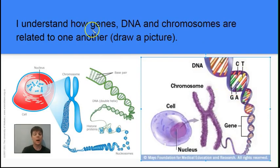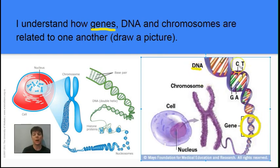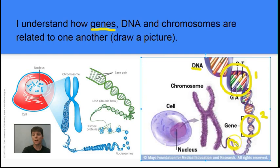Our next learning target is to understand the relationship of genes, DNA, and chromosomes. A gene is just a small region of a DNA molecule, and a gene is going to be transcribed to produce RNA. You can see on this DNA molecule in purple I've circled one gene here, a second gene here, and a third gene here.